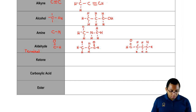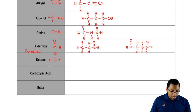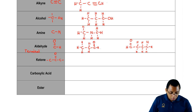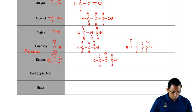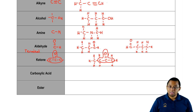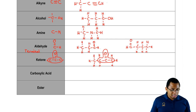A ketone — we have three carbons, and the middle one has a double bonded oxygen. The carbons on the ends could be further bonded to more carbons; that doesn't really matter. The most important part is that central portion that makes it a ketone. This would be a ketone because we have three carbons in a row and the middle one has a double bonded oxygen. We could have many more carbons on either end — it's still a ketone.